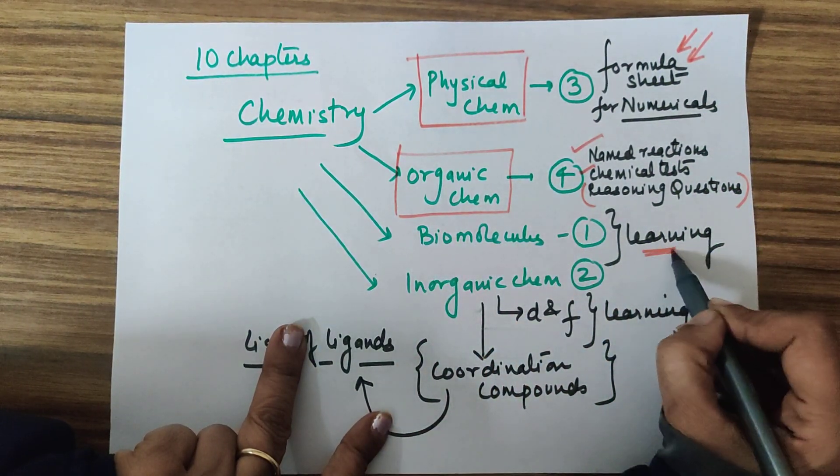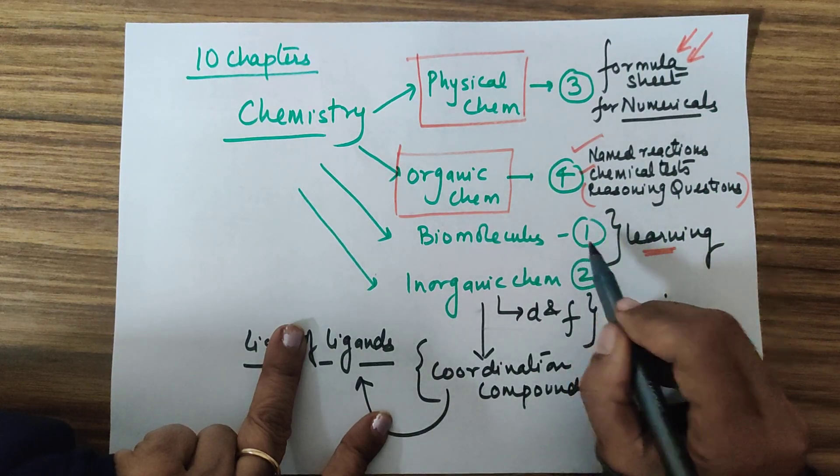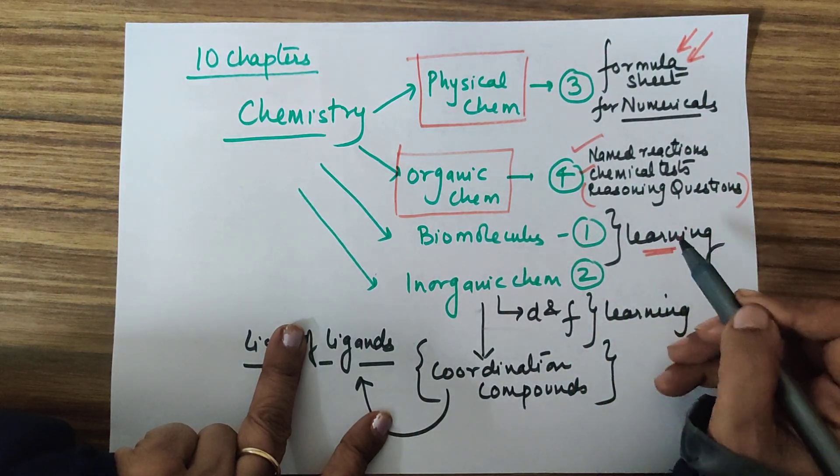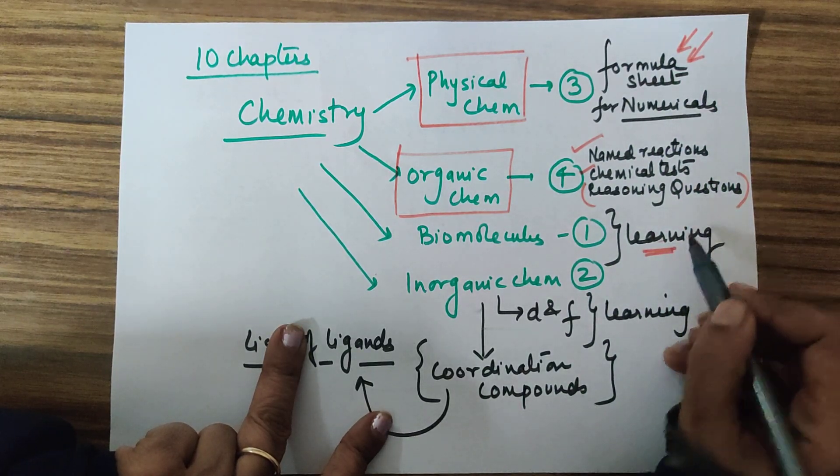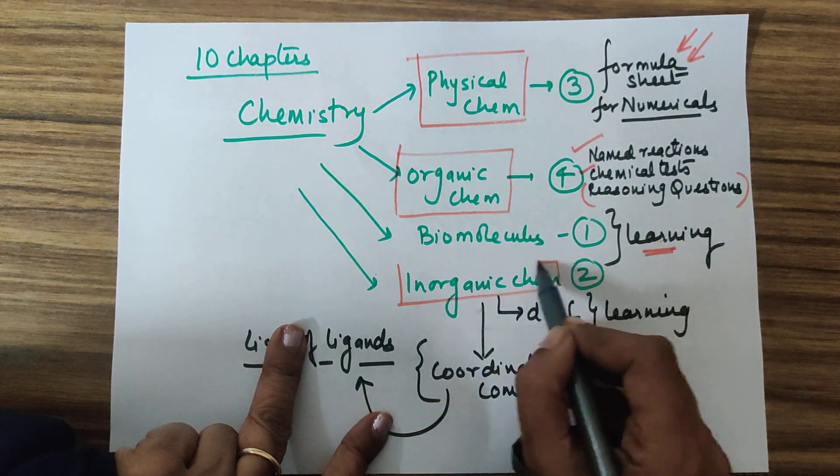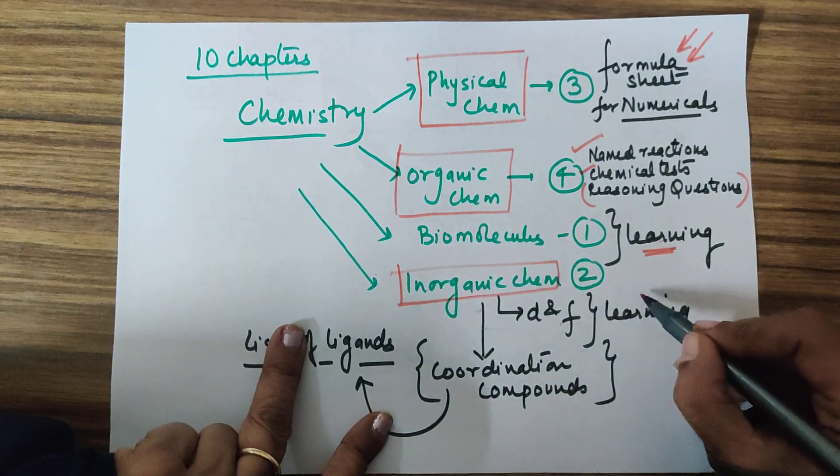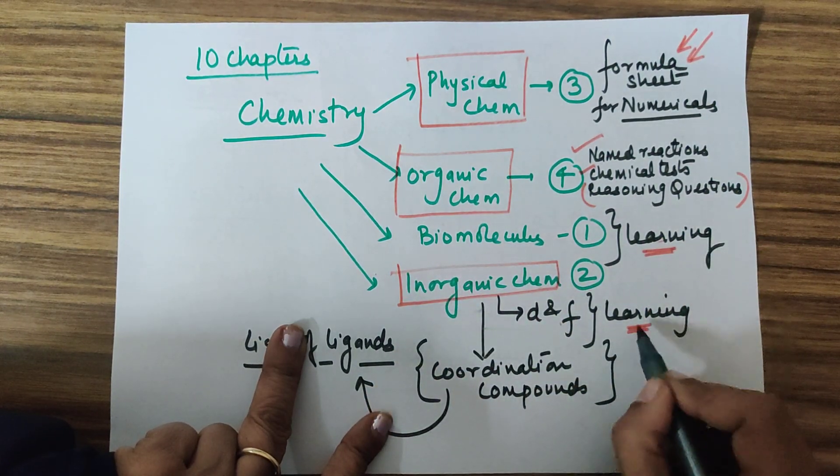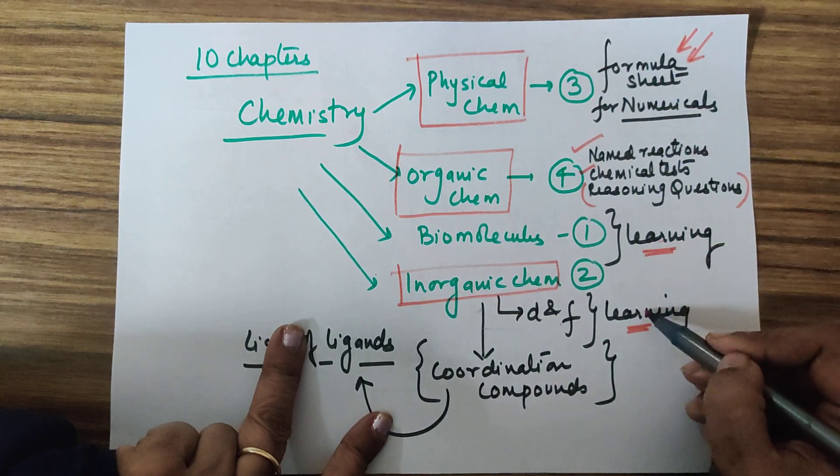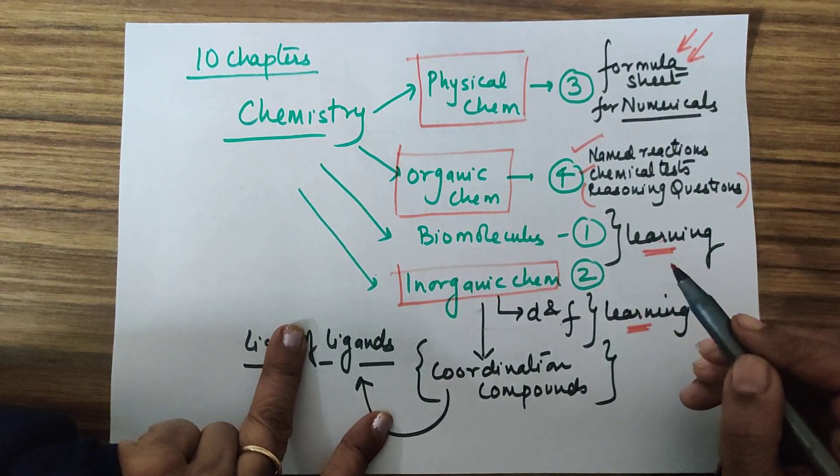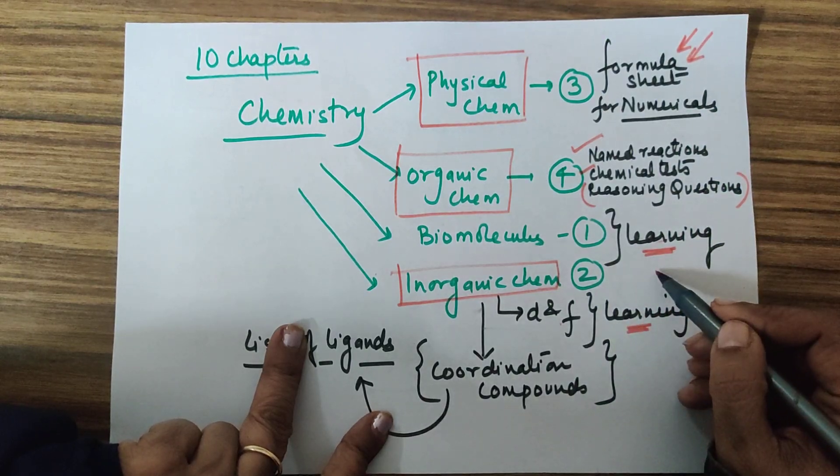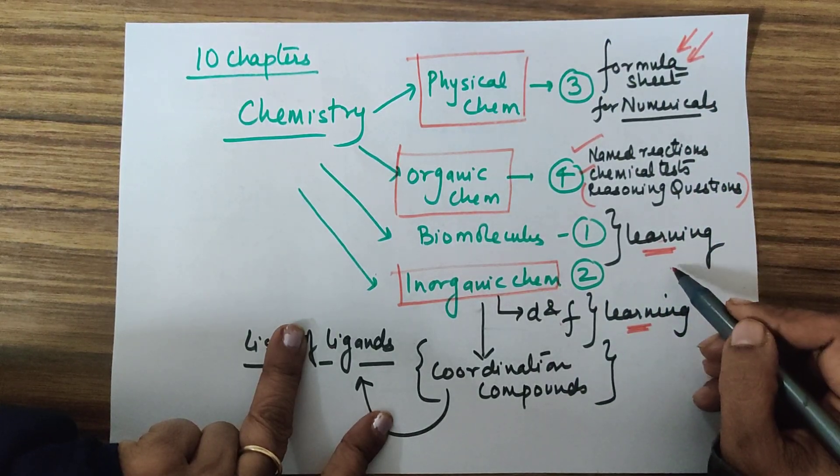Biomolecules is a learning chapter. We will give it every day, half an hour, 3-4 days. Then we will go to where to retain. Inorganic chemistry, you have D&F block. Again, it will require learning. In two chapters, it will require more time. And you will not have to do it in one time. You will have to do it in 2-3 times. Then you will have to retain this section.